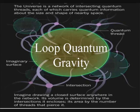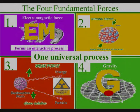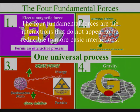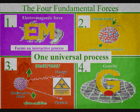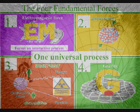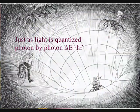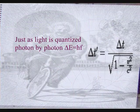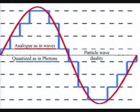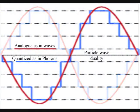Loop quantum gravity links quantum mechanics and general relativity into a theoretical framework that unites the four fundamental forces. It is an attempt to develop a quantum theory of gravity based directly on Einstein's geometrical formulation. To do this, in loop quantum gravity, space and time are quantized in the same way that energy and momentum are quantized in quantum mechanics.